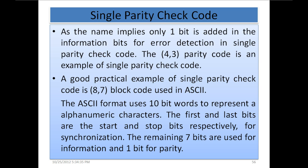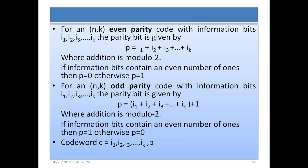The 4,3 parity code is an example of single parity check code. A good practical example of single parity check code is the 8,7 block code used in ASCII. The ASCII format uses 10-bit words to represent an alphanumeric character. The first and last bits are the start and stop bits respectively for synchronization. The remaining 7 bits are used for information and 1 bit for parity. Now let's see how this parity is calculated and added in the information bits.